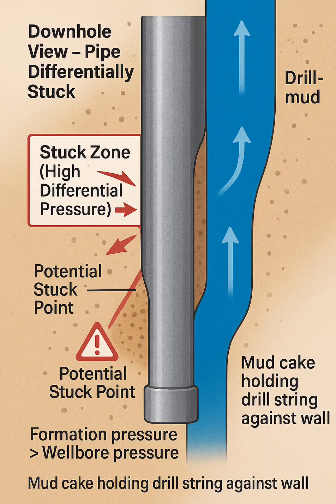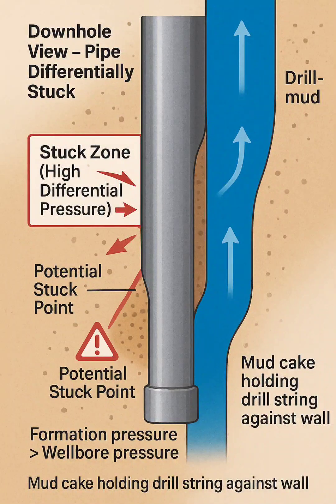This illustration shows a downhole cross-section of a differentially stuck drill pipe, a common stuck pipe mechanism caused by pressure imbalance between the formation and the wellbore. Here's a detailed breakdown.